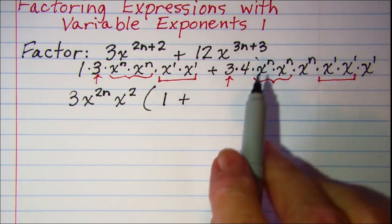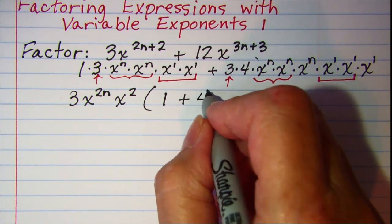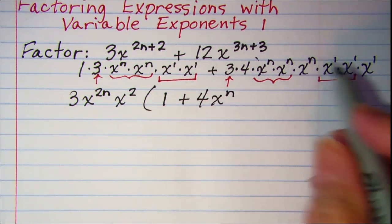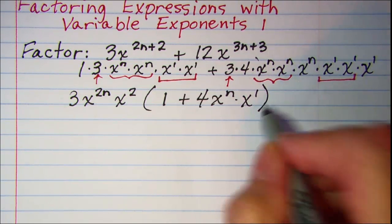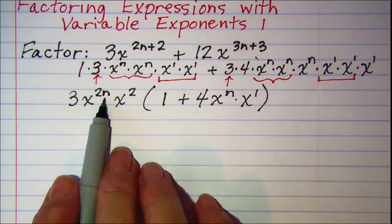So plus, and then on this one I still have 4 and then x to the n and x to the 1. Now we can simplify this so that it's cleaned up here.